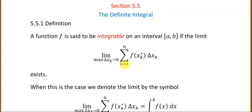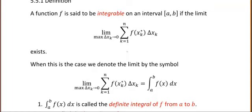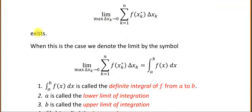All right, of the sum as k goes from 1 to n of f of x sub k star, that's the height of the rectangle, times delta x sub k, that's the width of the rectangle. So this gives us the area of the k-th rectangle, and we're adding those rectangles up. If this limit exists,